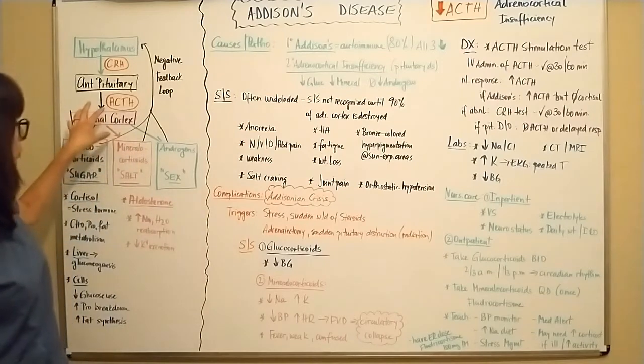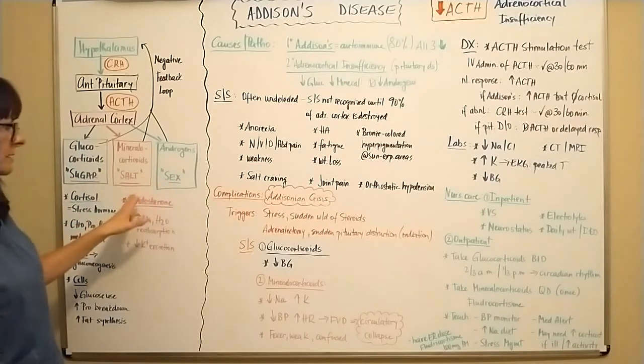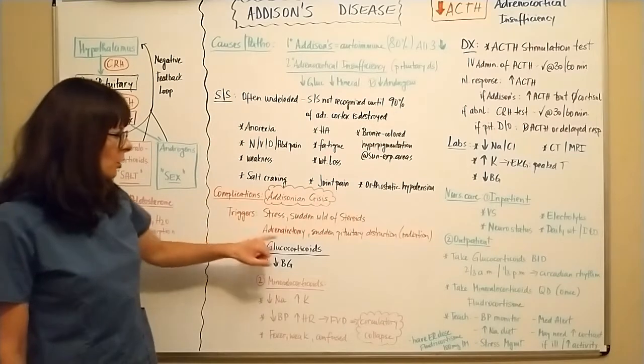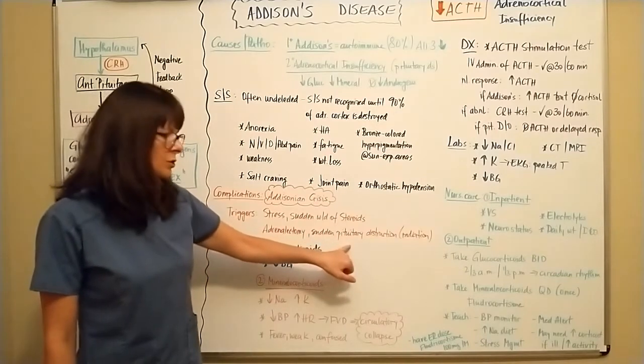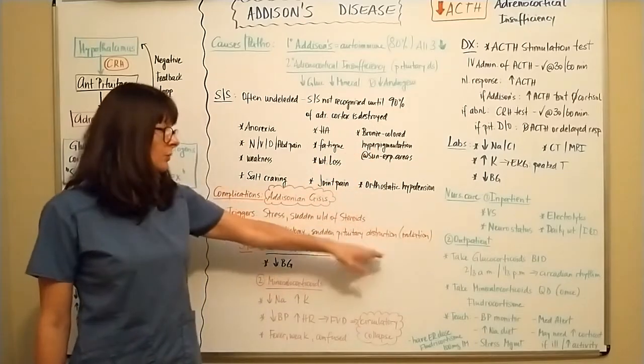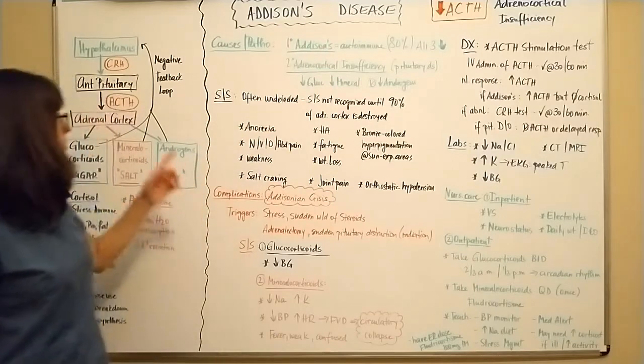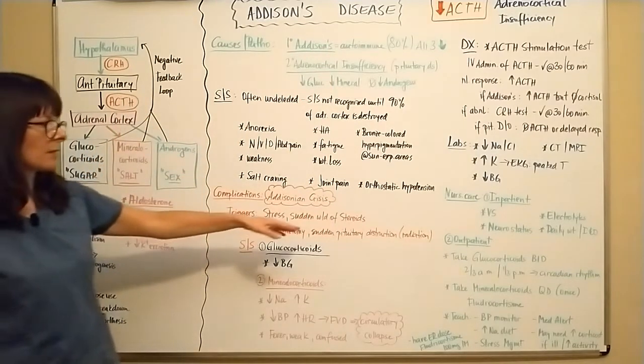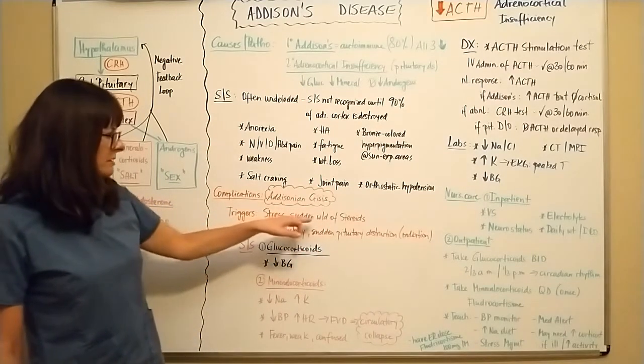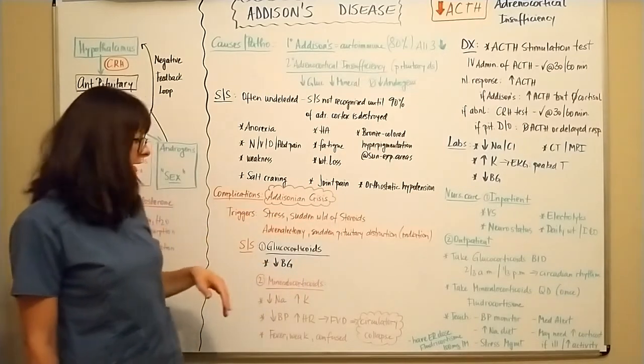Adrenalectomy. So if the adrenal cortex is suddenly removed, it cannot produce any of these 3S hormones and then will lead to an Addisonian crisis. Or if there is sudden destruction of the pituitary glands, such as in radiation, and that would be the treatment for Cushing's disease, which is the opposite, because a tumor would produce increased ACTH. But we would want to get rid of that if it was the opposite Cushing's disease. So triggers can be stress, sudden withdrawal of steroids, adrenalectomy, or sudden pituitary destruction due to radiation.